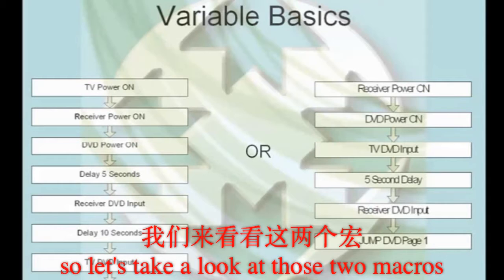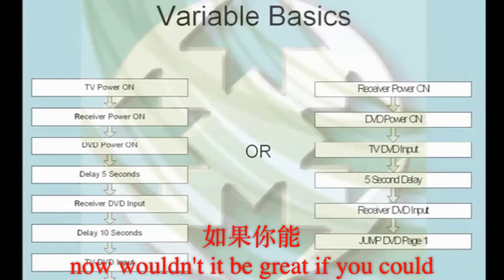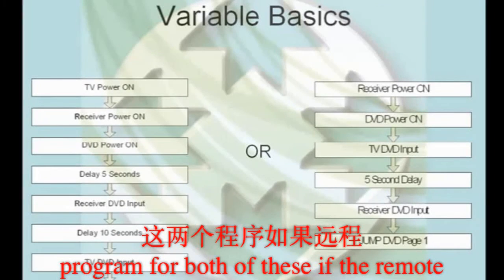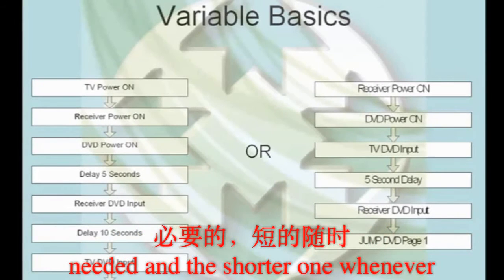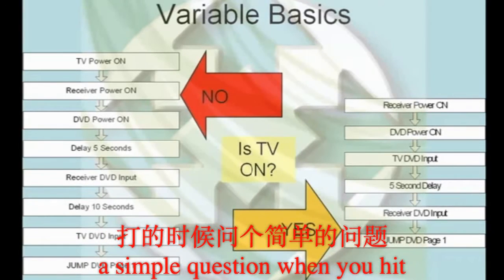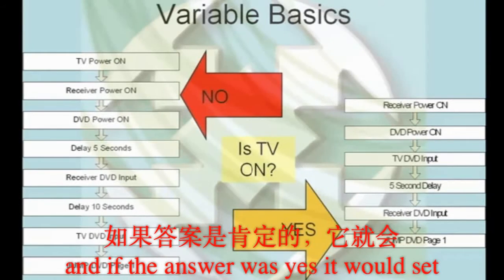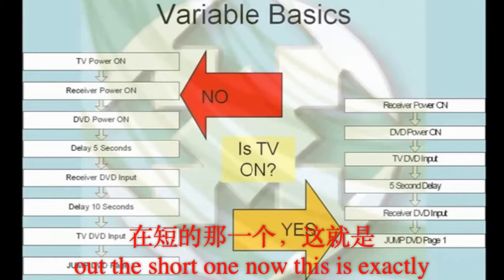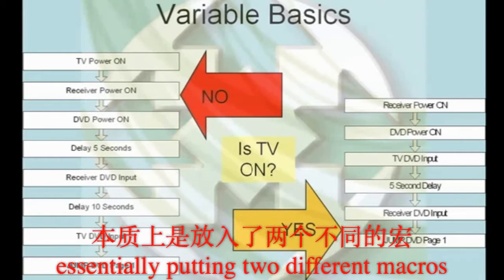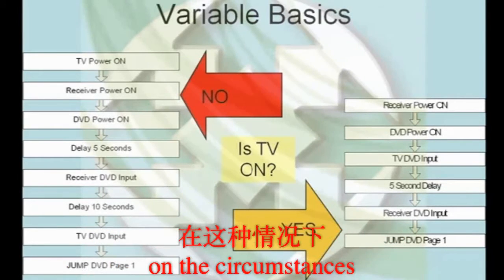So let's take a look at those two macros side by side. Both can be valid, although only the one on the left is the one you can be certain will always work. Wouldn't it be great if you could program for both of these — if the remote could send out the longer one when needed and the shorter one whenever possible? Imagine if the remote could just ask a simple question: when you hit the watch DVD button, is the TV on? If the answer was no, it would send out the long macro, and if the answer was yes, it would send out the short one. This is exactly one of the things that a variable can do for you, essentially putting two different macros on a single button and deciding which one to send based on the circumstances.